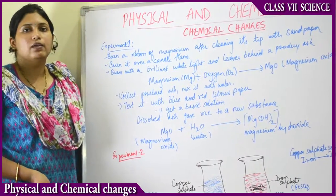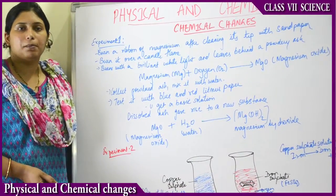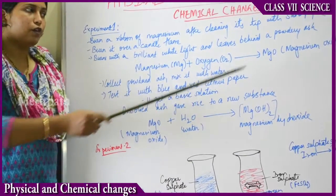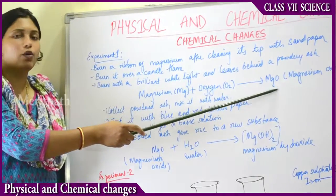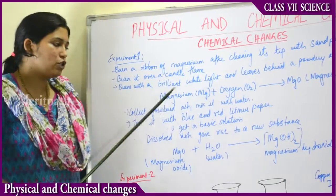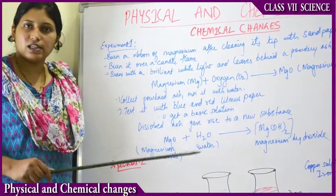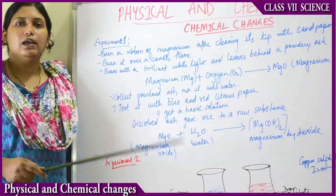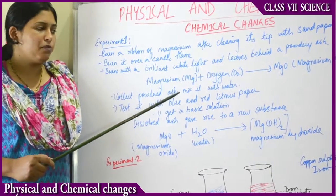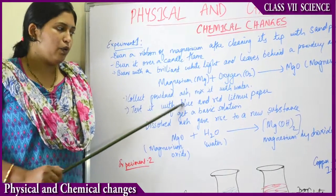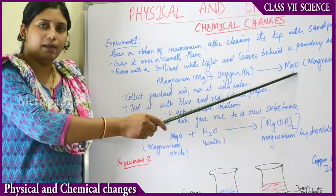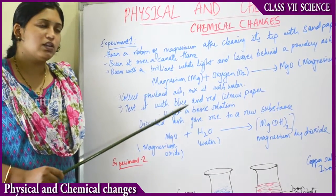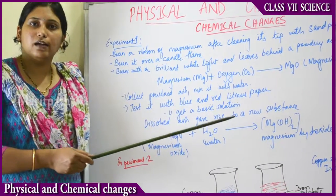These chemical reactions are not similar to mathematical reactions — they are completely different. In the further process, after the powdery ash MgO has formed, it has to be mixed with water and stirred so that it completely gets mixed up. Collect the MgO, magnesium oxide, and mix it with water.